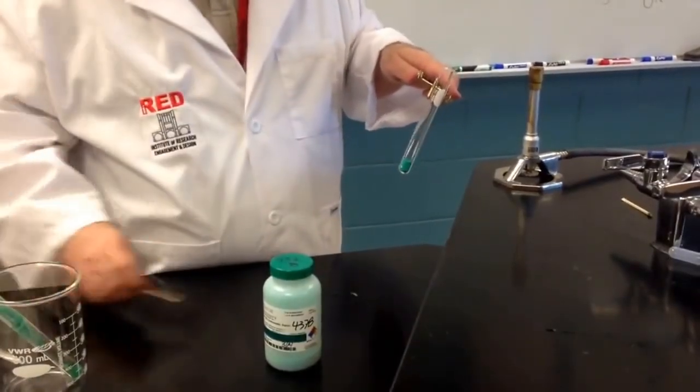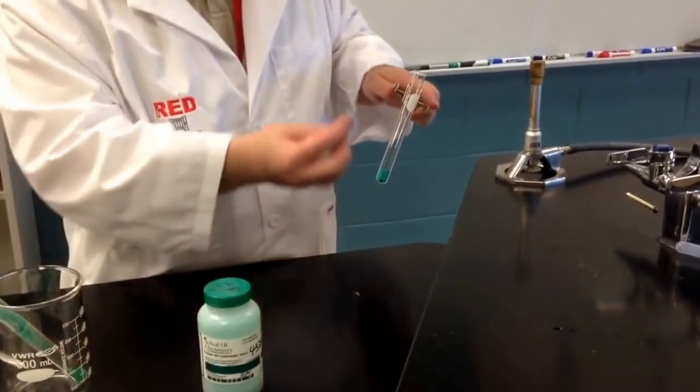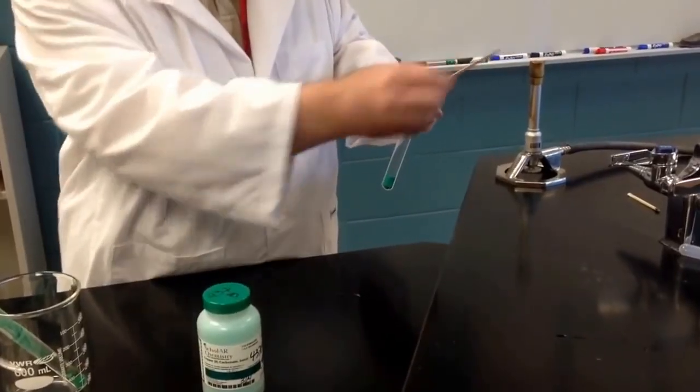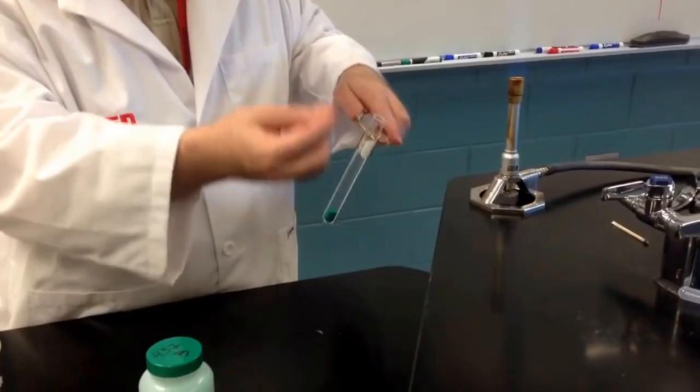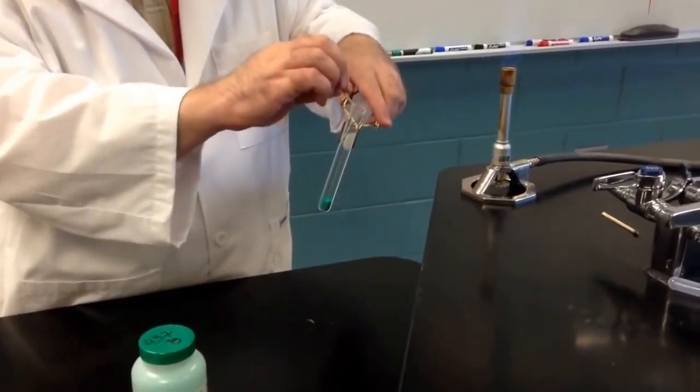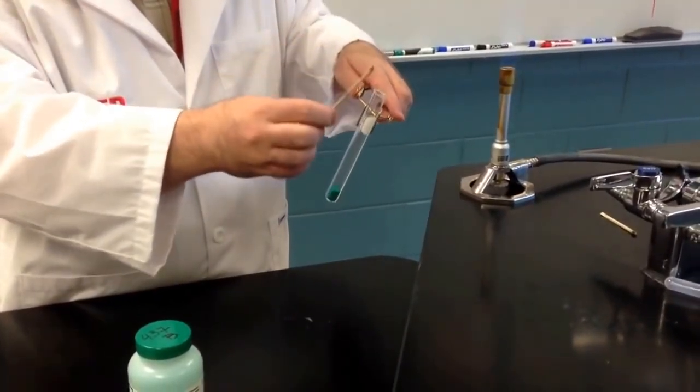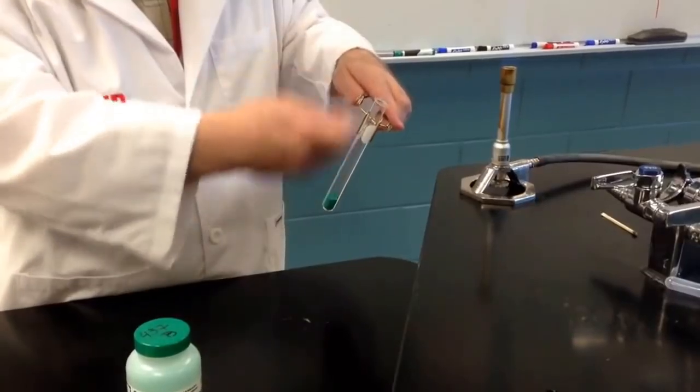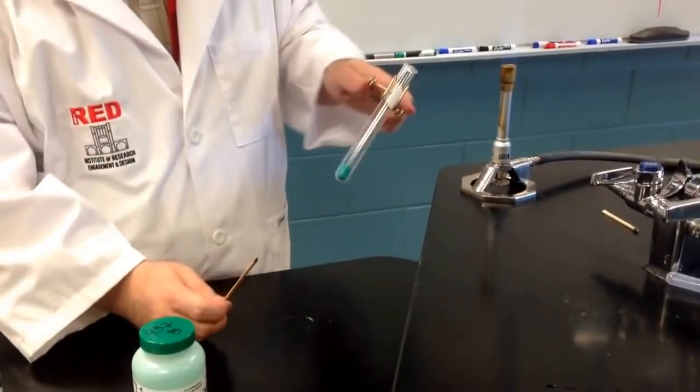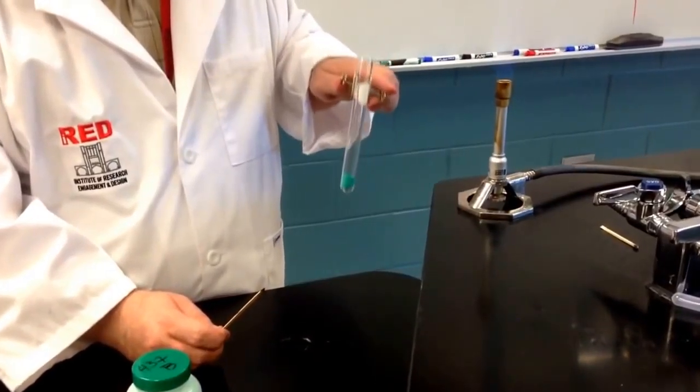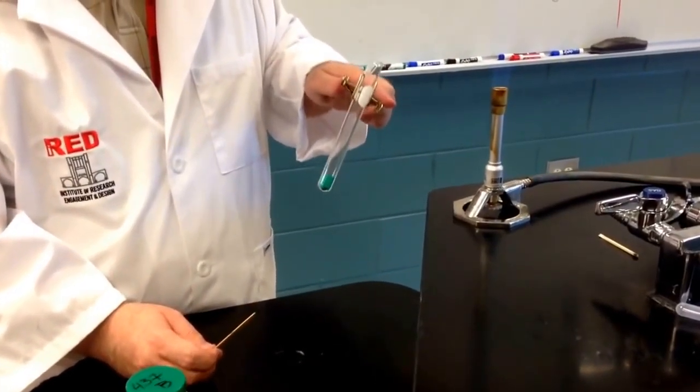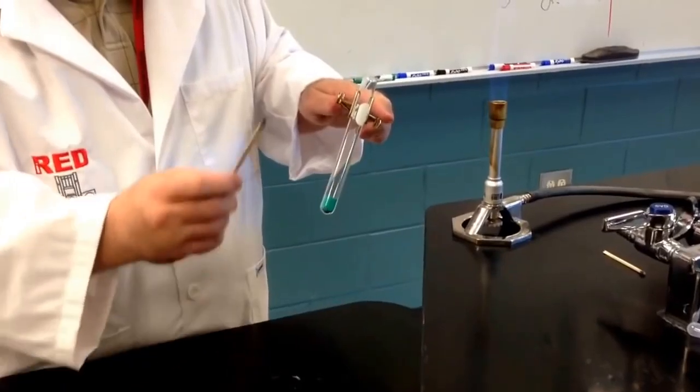And we're going to test for the presence of carbon dioxide by taking a splint, light the splint in the flame, hold the lit splint over the mouth of the test tube, and if this lit splint goes out, that will indicate to us that indeed carbon dioxide is being released during this reaction. Again, this is an example of decomposition of copper 2 carbonate, and it's going to form copper 2 oxide and carbon dioxide.